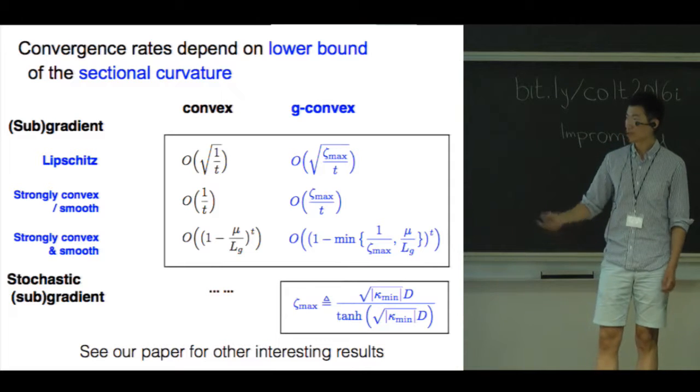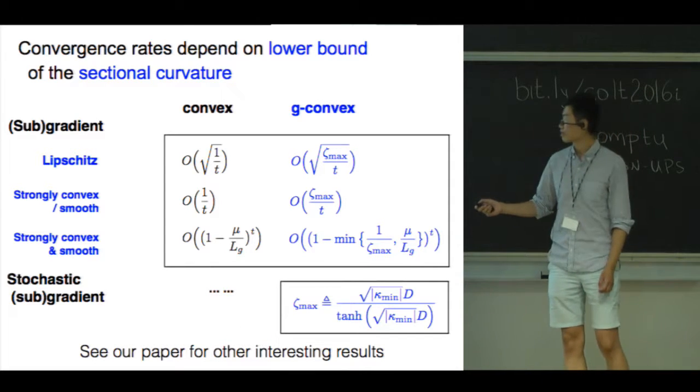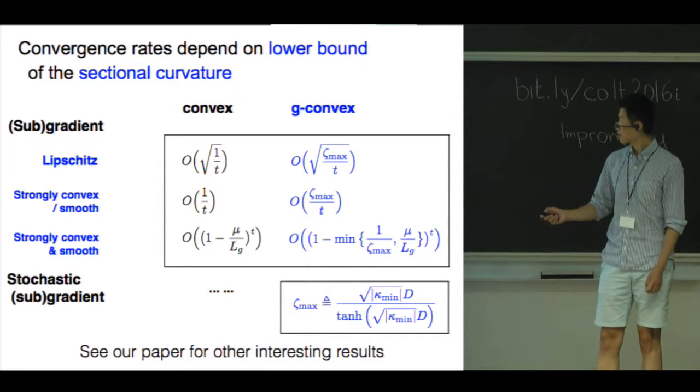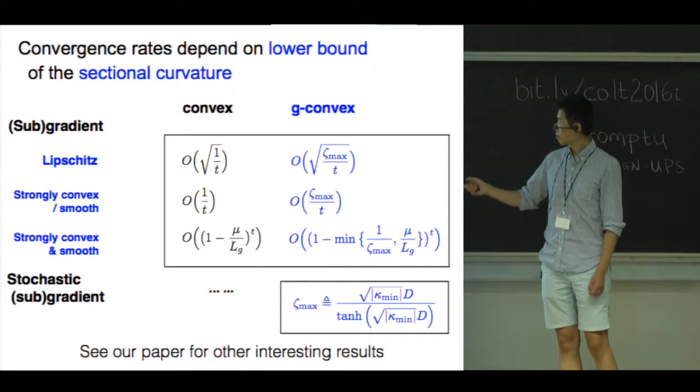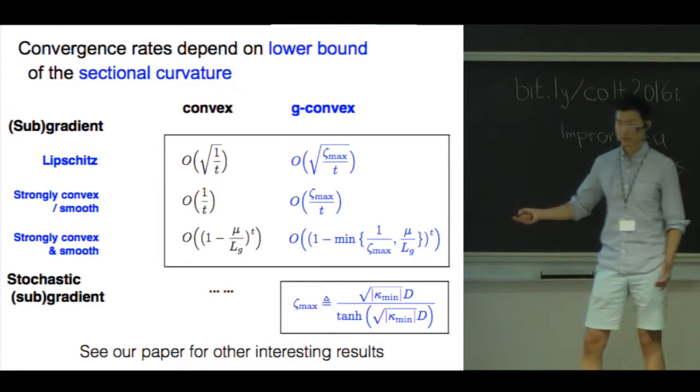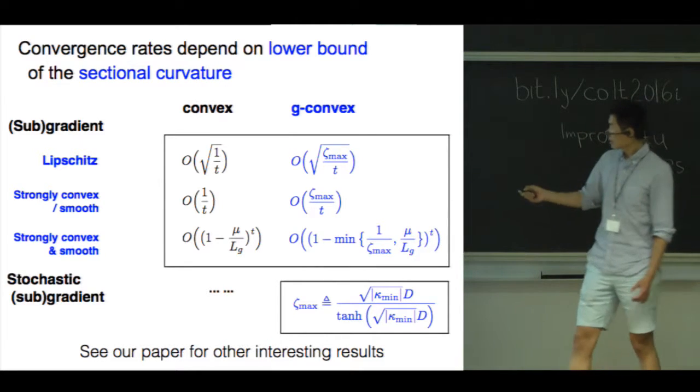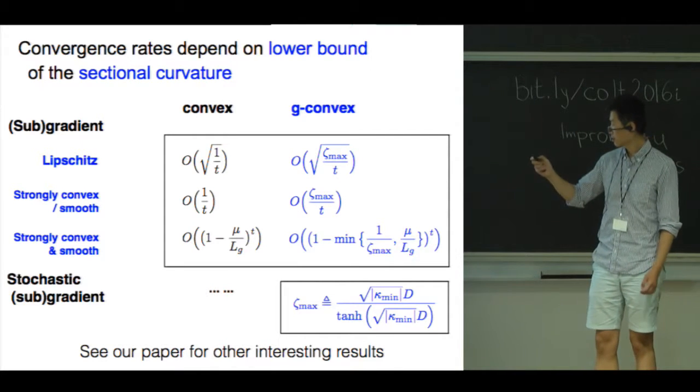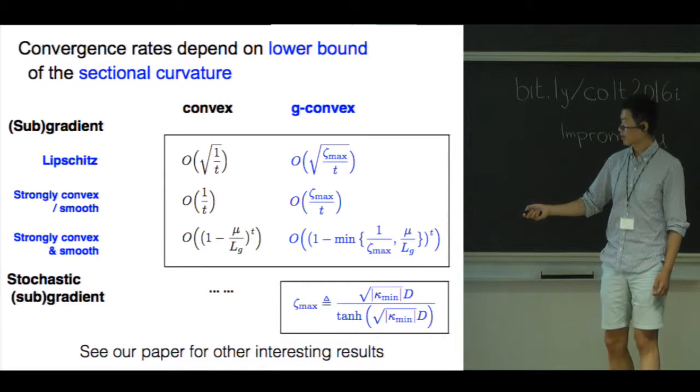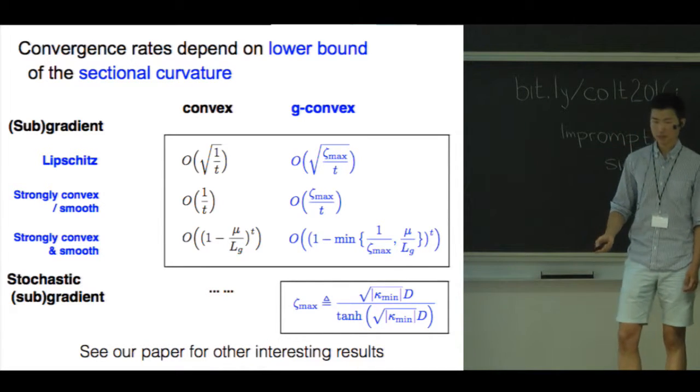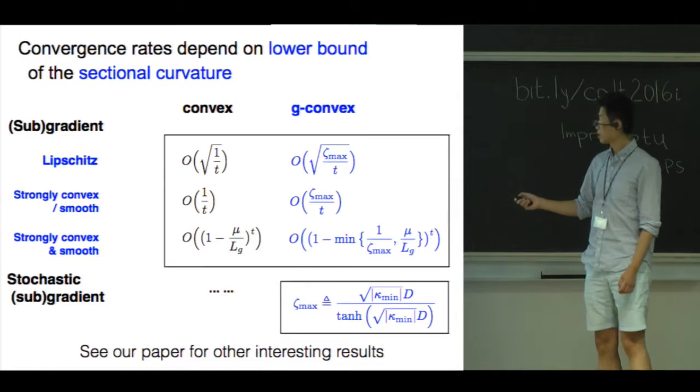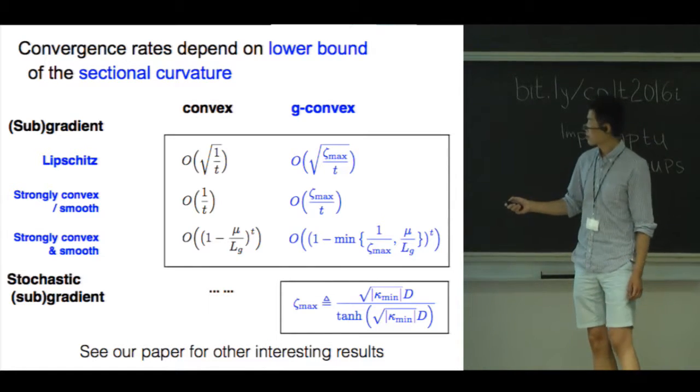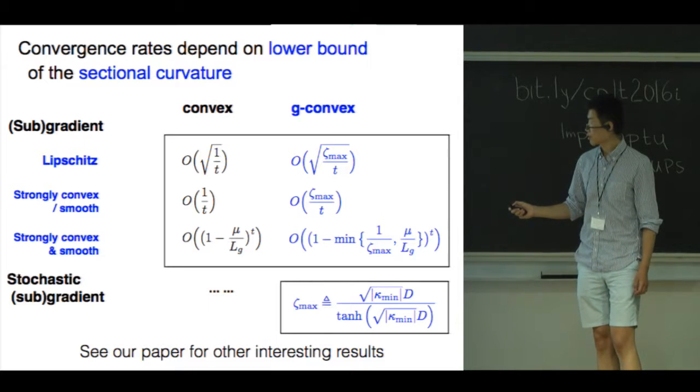Using this one lemma, we are able to generalize many convex optimization results to the Riemannian setting. We prove results for gradient and subgradient methods for a variety of function classes in both batch and stochastic settings.